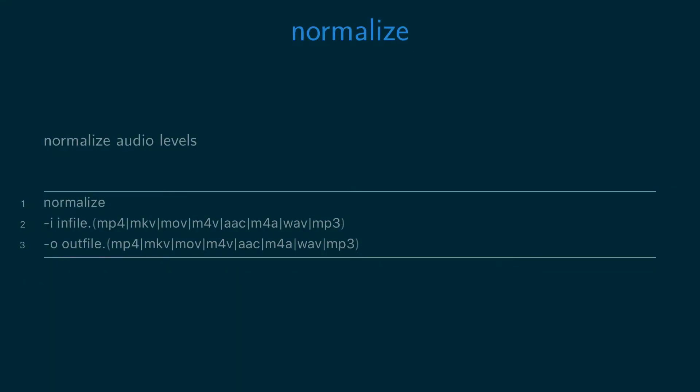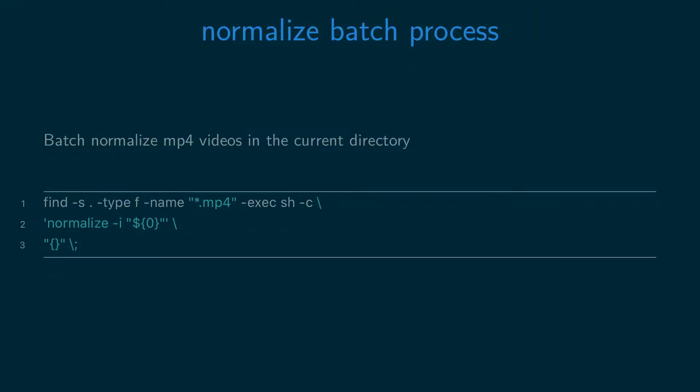The normalise script normalises audio to the EBU-128 loudness standard. Run the normalise script with the dash I option and then the path to a video or audio file. Then use the dash O option to specify an output file name. You can also batch process all the video and audio files in the current directory to normalise the audio levels to the EBU-128 loudness standard.